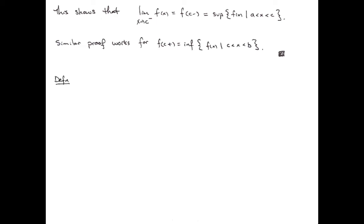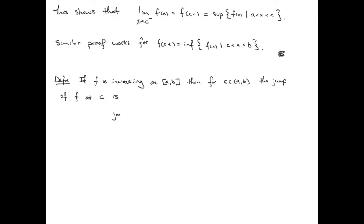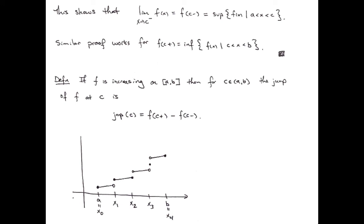Now for our next definition: if F is an increasing function on a closed interval A to B, and C is in the interior, we define the jump at C to be the right-hand limit minus the left-hand limit. When we think of a monotonic function, we can draw a picture with X values on the number line, where the only discontinuities are occasional jumps — that's the archetype of what a monotonic function looks like.